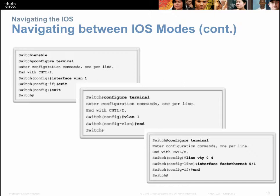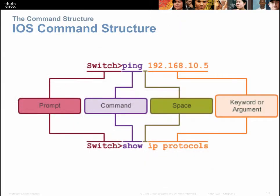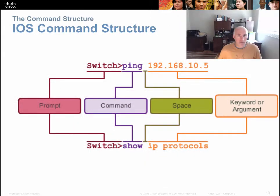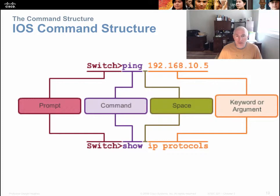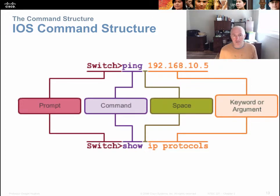The structure of commands starts with a prompt — you always have a prompt in the CLI. After the prompt, you type a command, followed by a space. Then sometimes you provide a keyword or argument for the command. For example, if the command is 'ping', you must tell it where to send the message: 'ping www.yahoo.com' or 'ping 192.168.10.5'. Similarly, 'show' is a powerful command that shows settings, but you must tell it what settings to see — for example, 'show ip protocols' displays the IP settings.